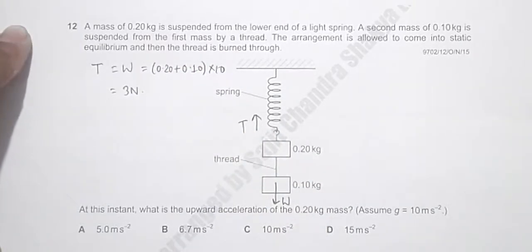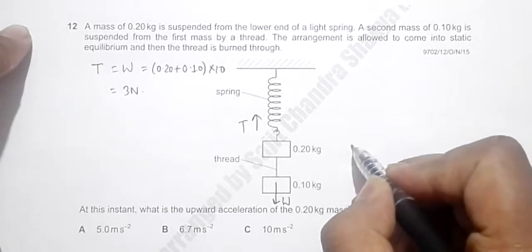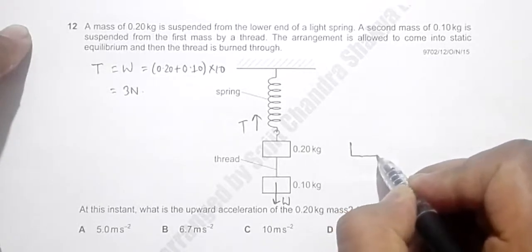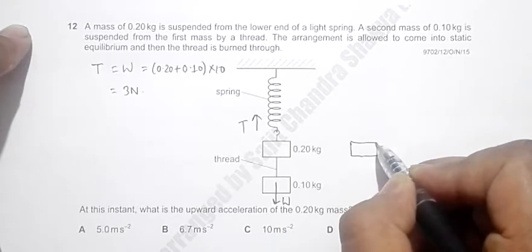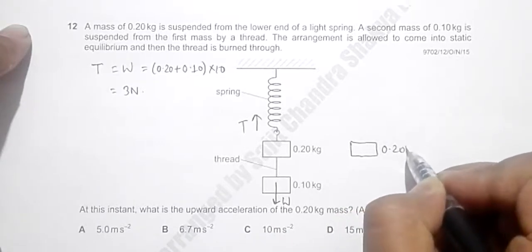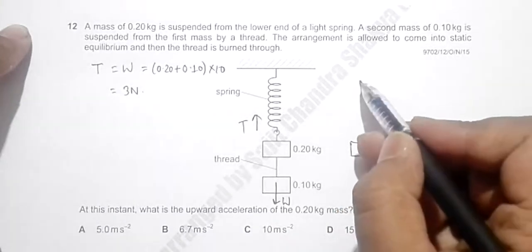Now as soon as we cut off this string, only the upper load will remain which is 0.20 kg, and only the spring remains here.